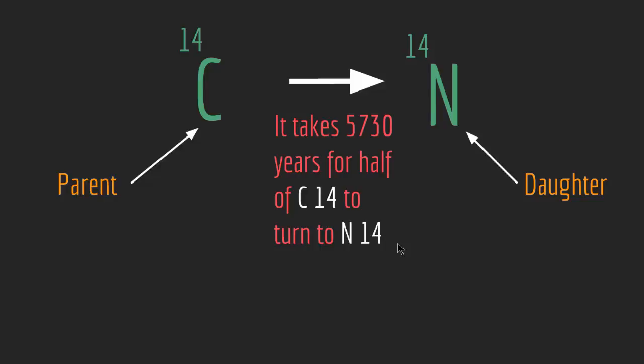So when you have carbon-14 or isotope carbon-14 in a material, and since it's unstable, it will turn to nitrogen-14. But in order to do that, it will take 5,730 years for half of that carbon in order to turn into nitrogen-14.